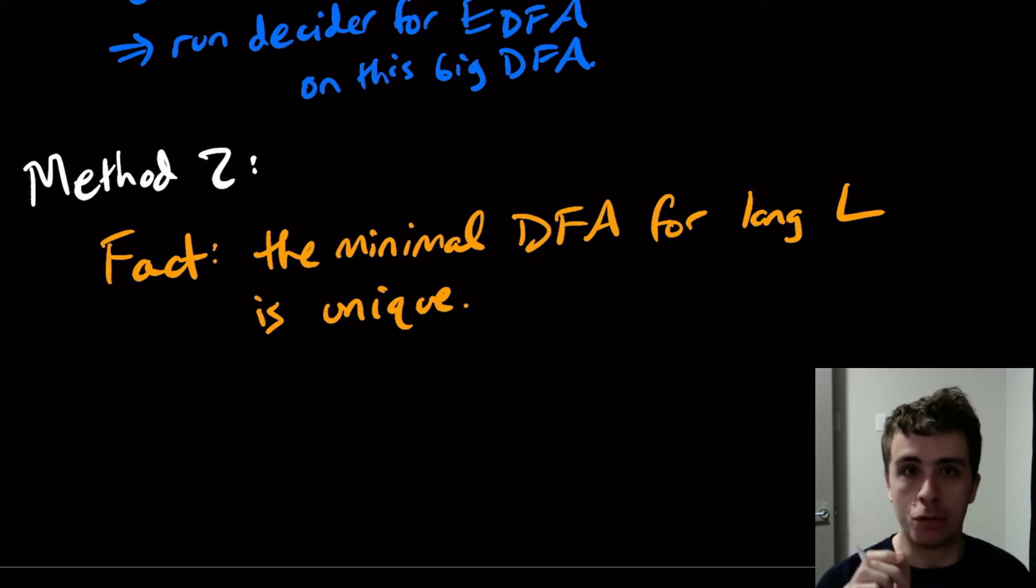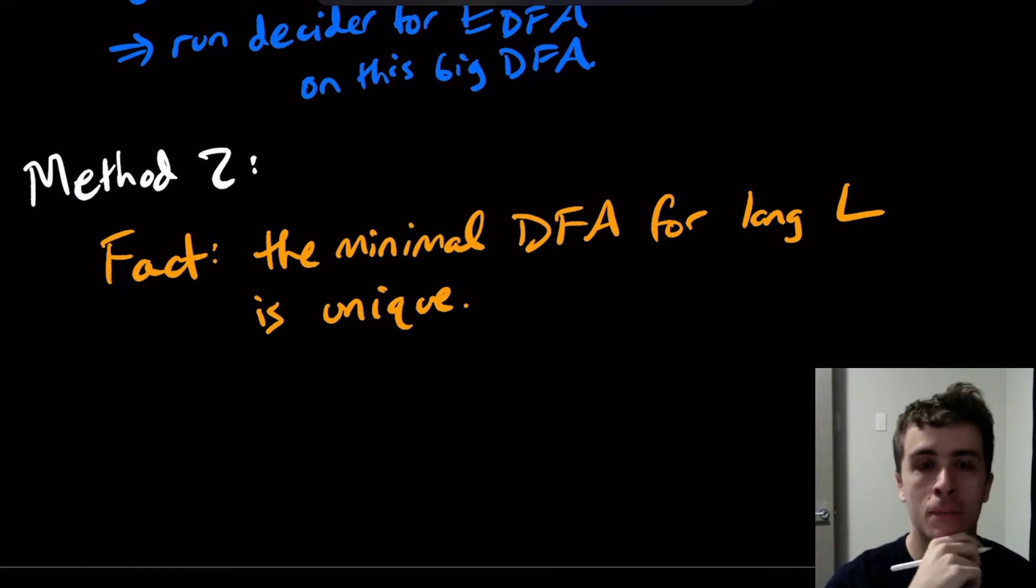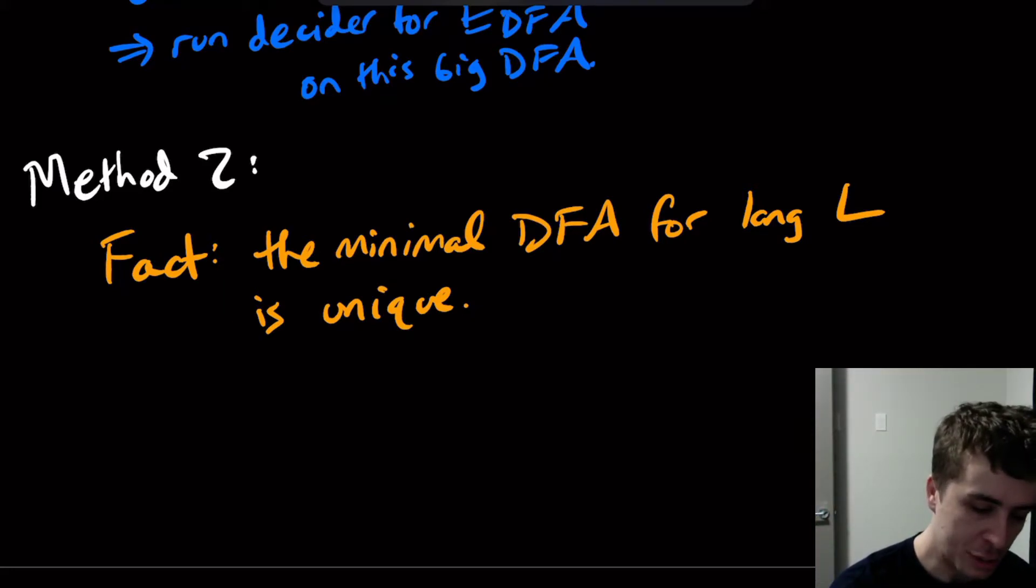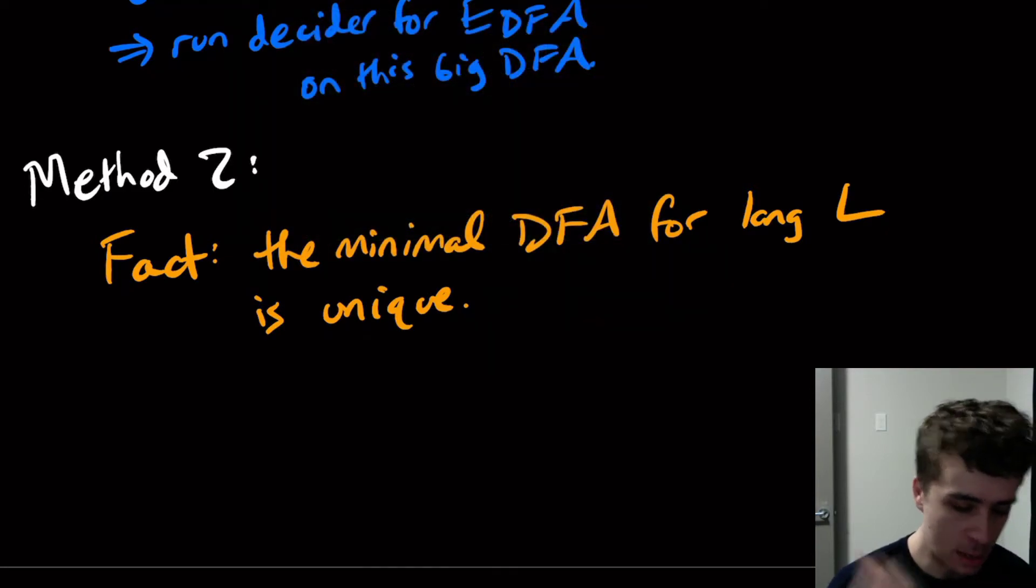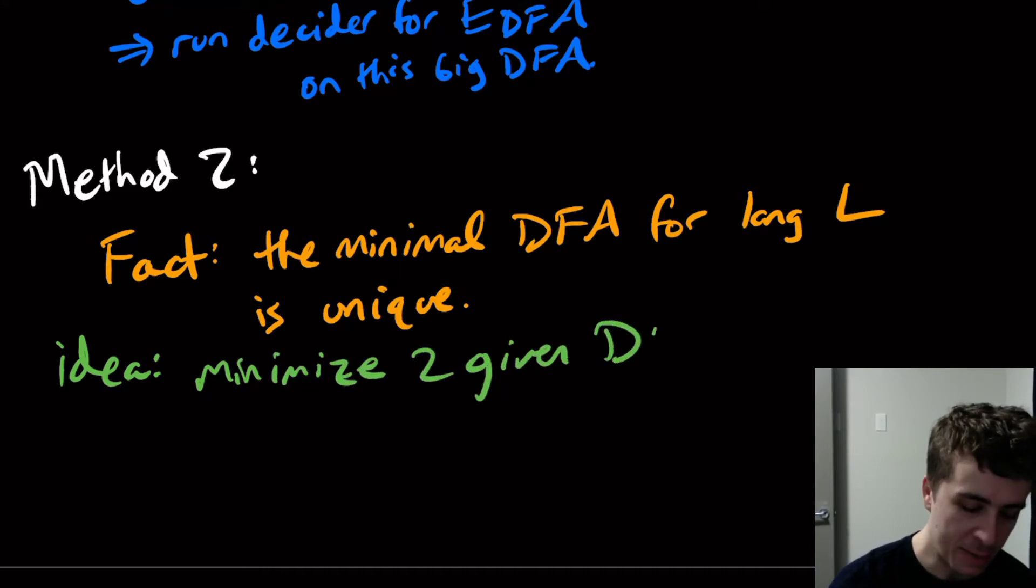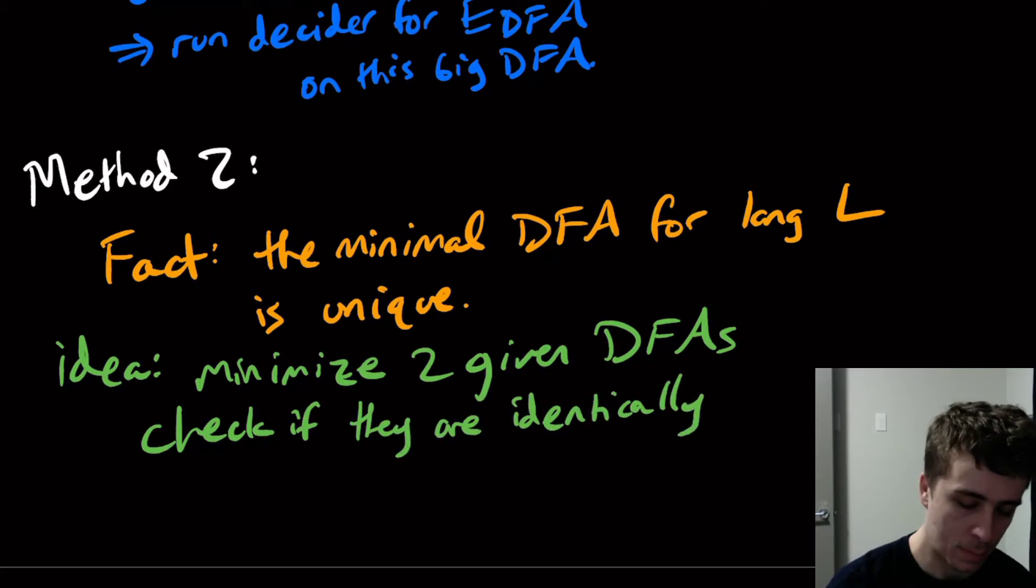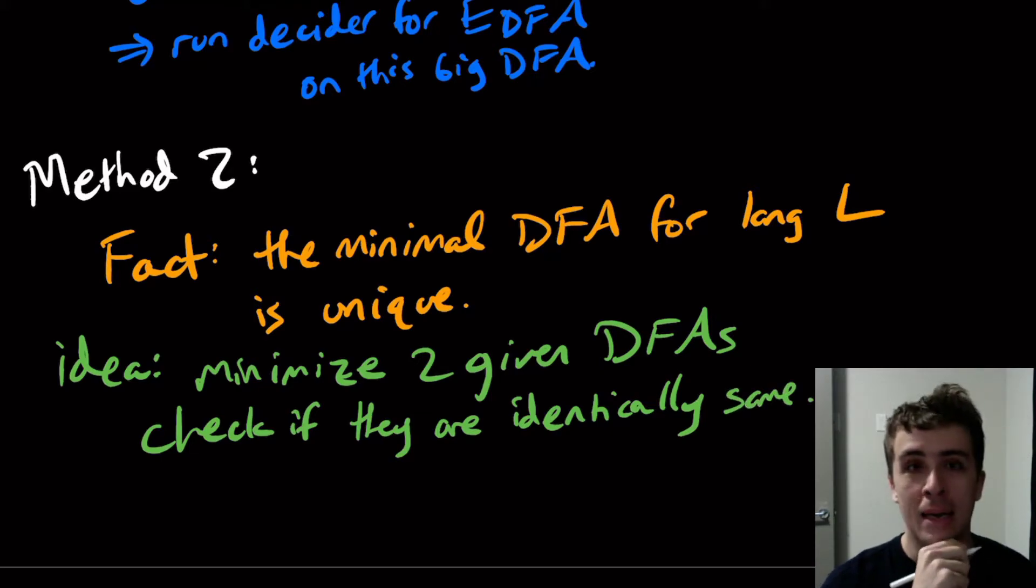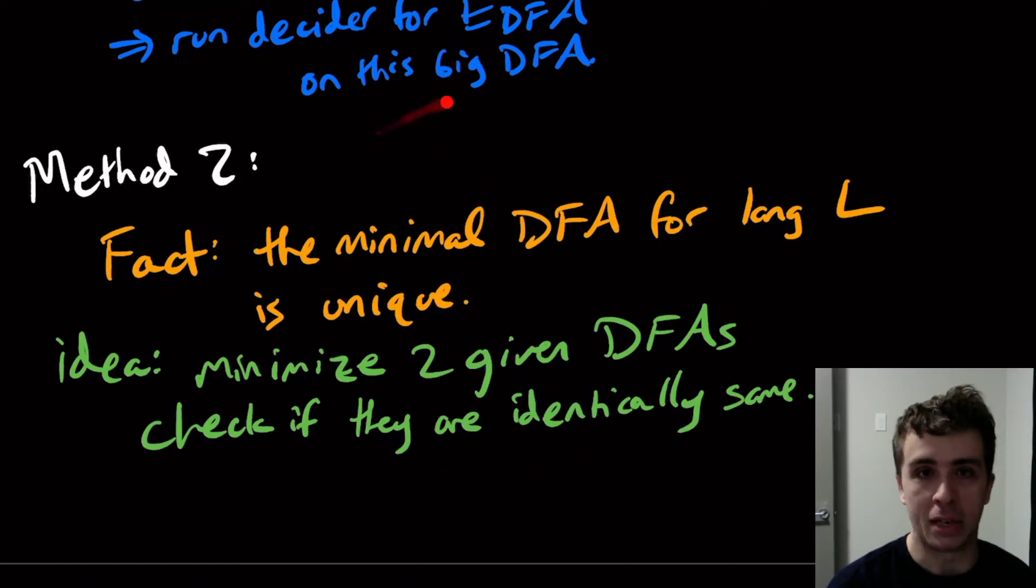I'm not going to prove that here because I've actually proved it on the channel before, but it's actually not that hard to prove. So one way to use this to our benefit is to minimize the two given DFAs. The idea here is to minimize the two given DFAs and then check if they are identically the same. And that's a lot easier. The checking that they're the same is much easier than it was up here.